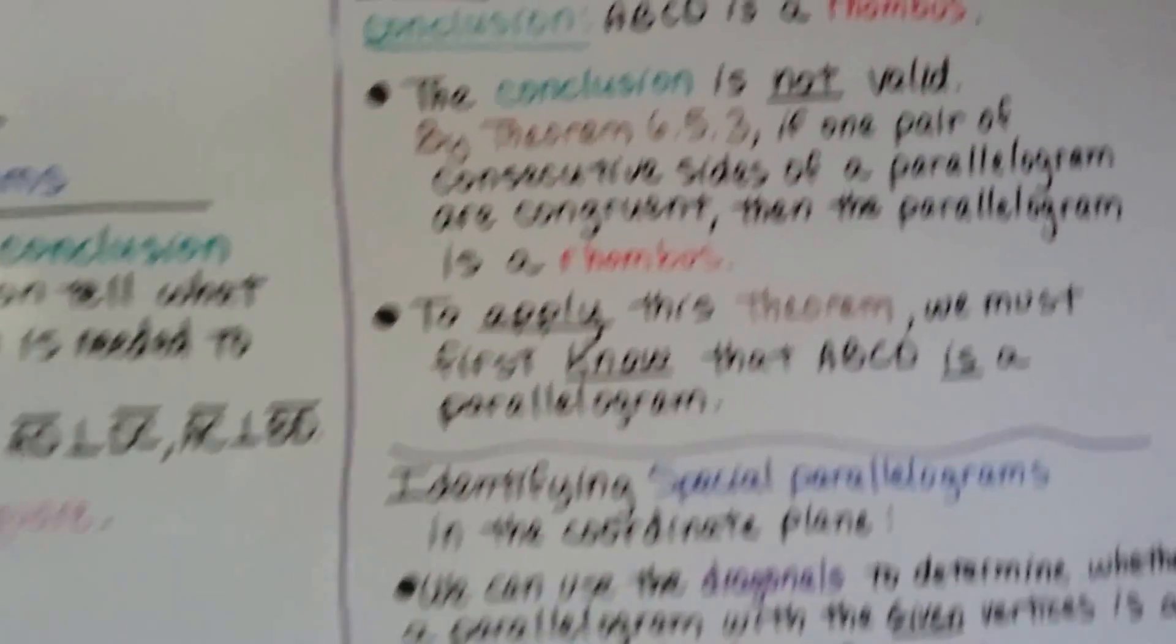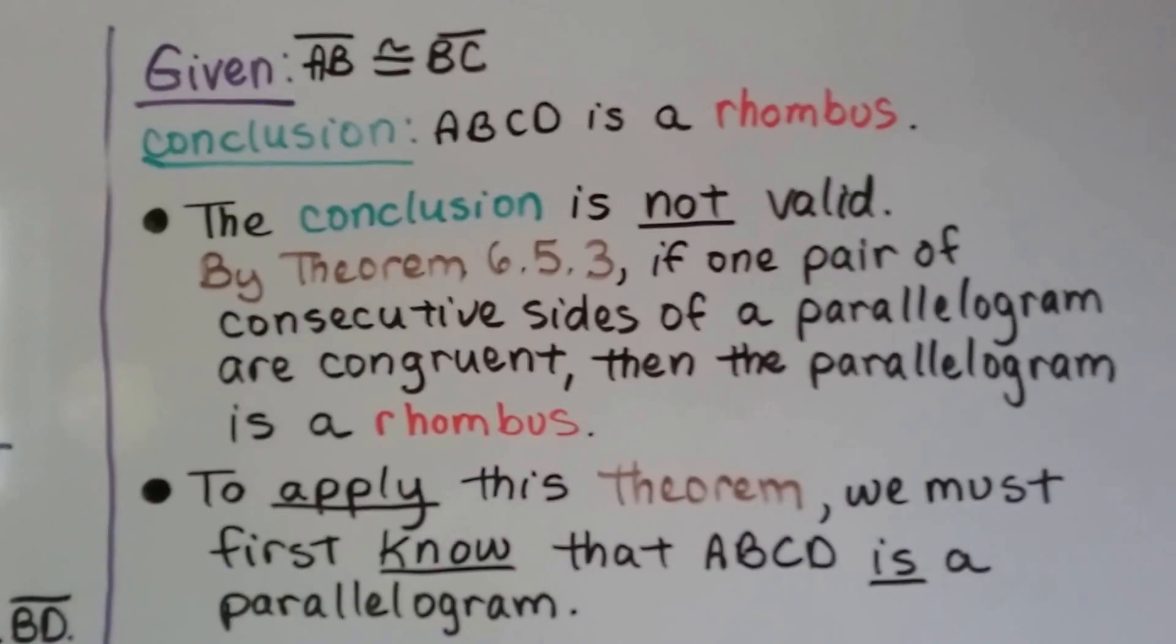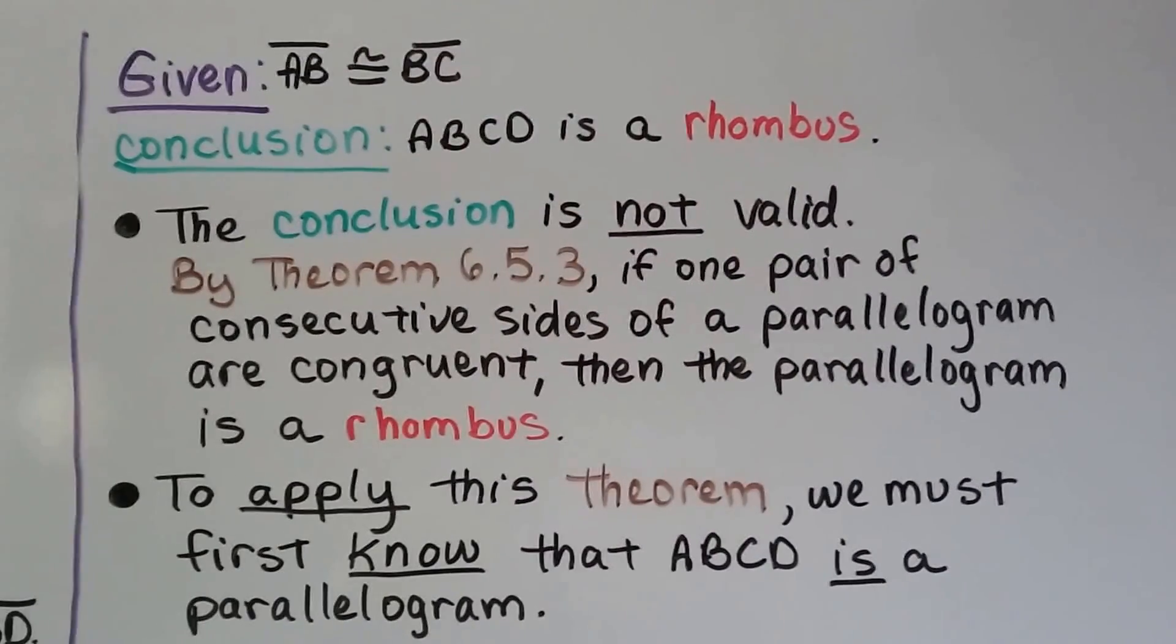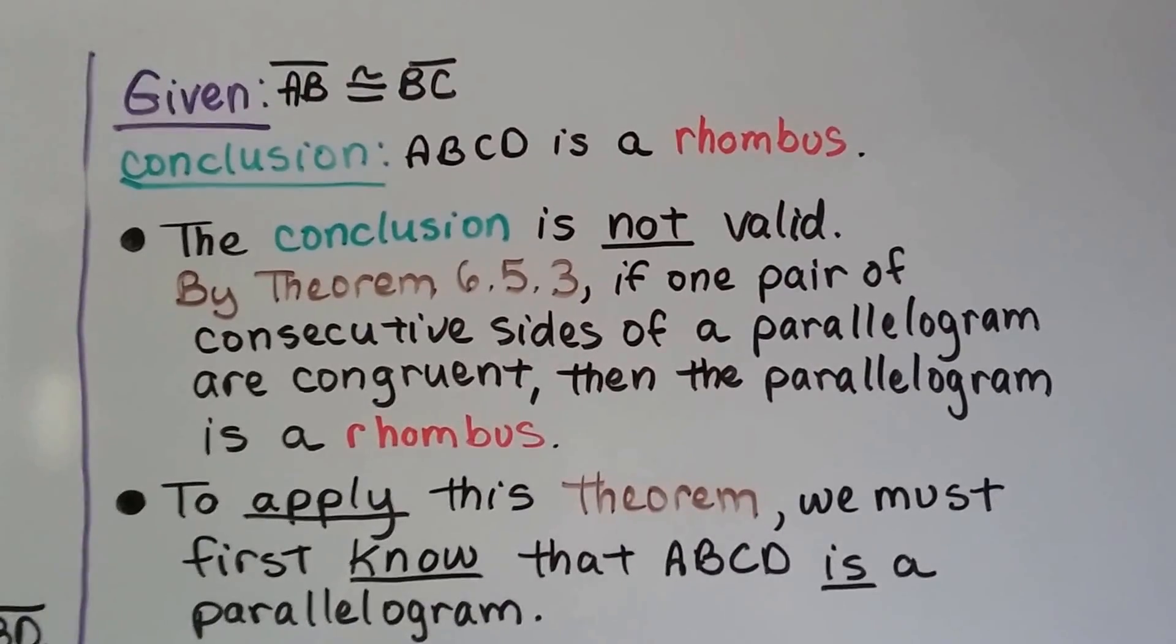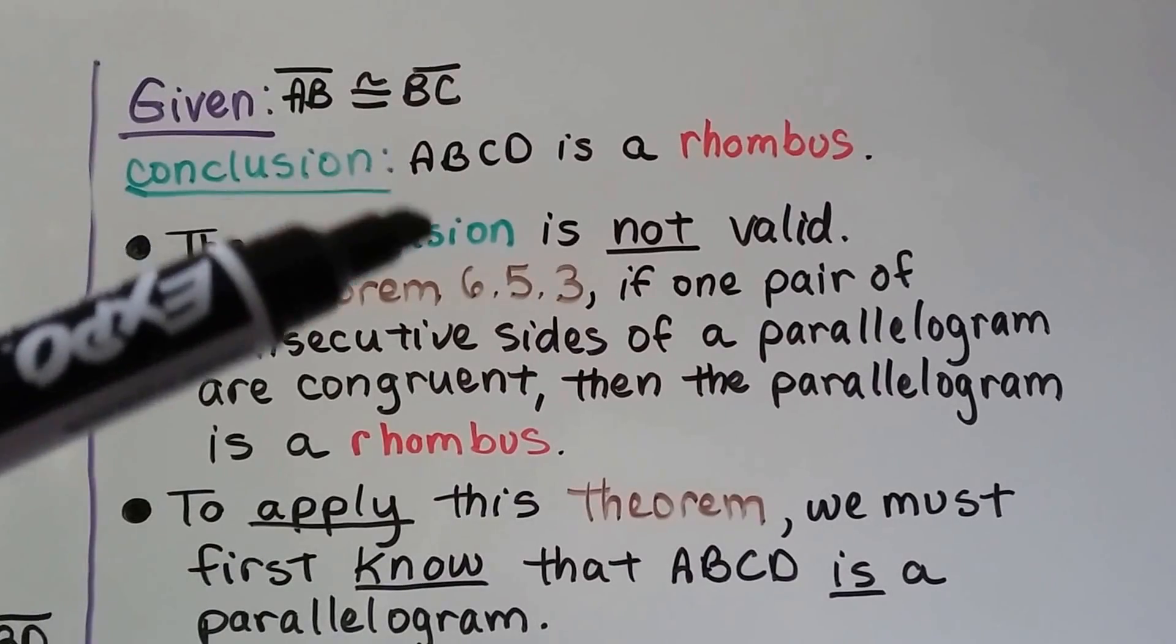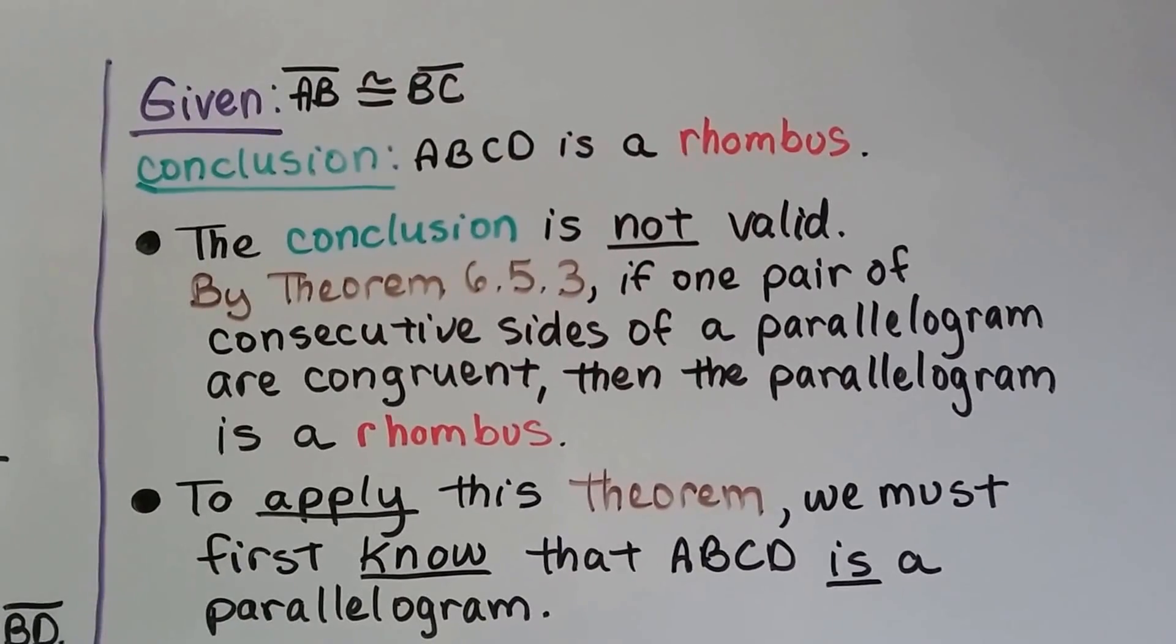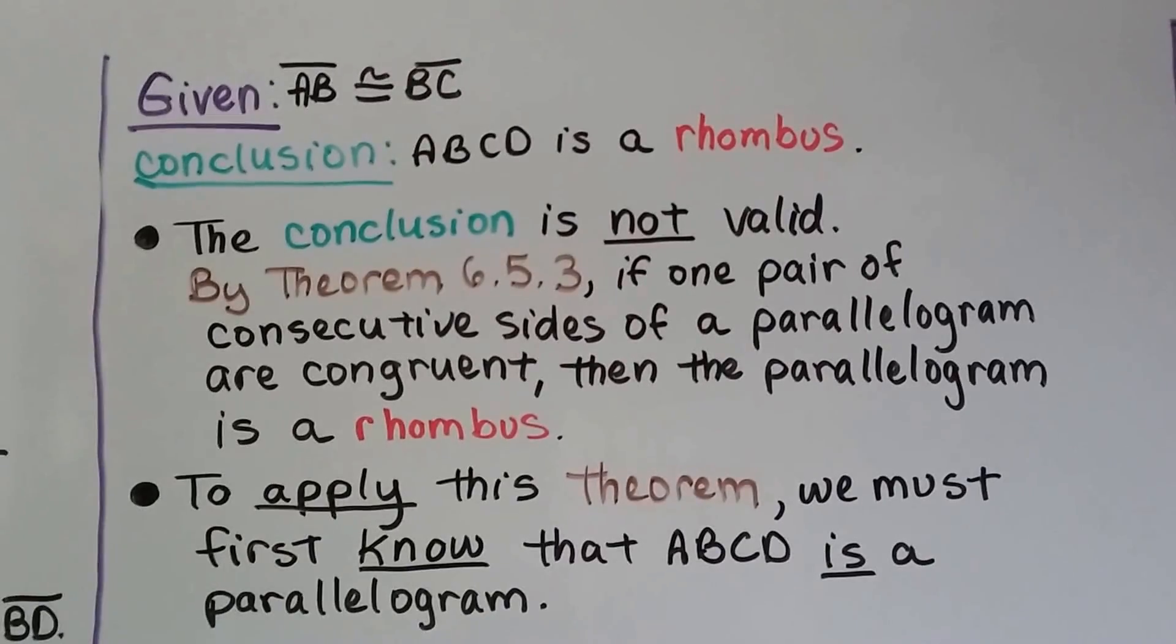So how about this one? It says given that segment AB is congruent to BC. The conclusion is that ABCD is a rhombus. Would we be able to tell that a figure is a rhombus just from two segments being congruent? No. This conclusion is not valid.